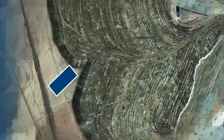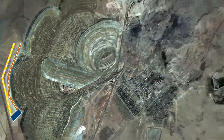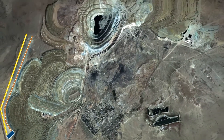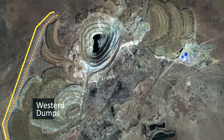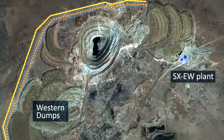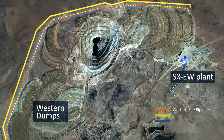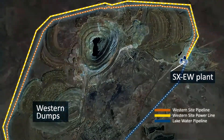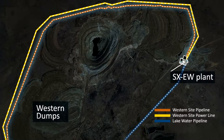From the collector trench, the solution — now called pregnant leach solution — is pumped into storage ponds and then onto the processing plant to begin the solvent extraction stage of the process.